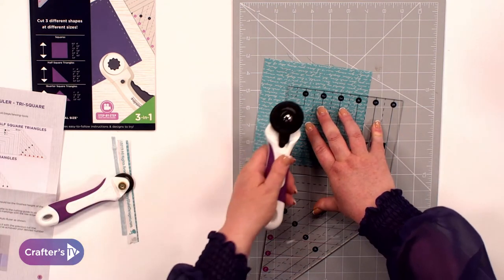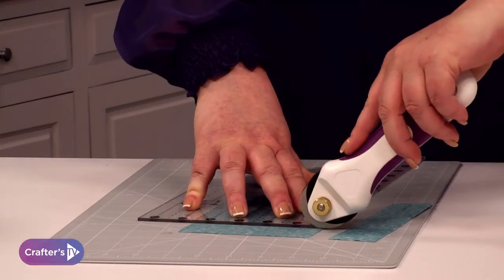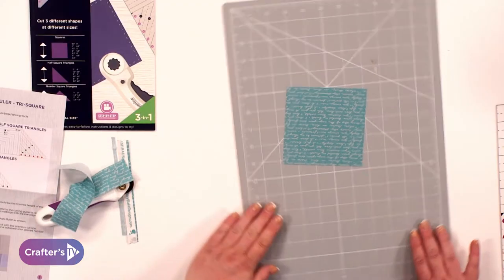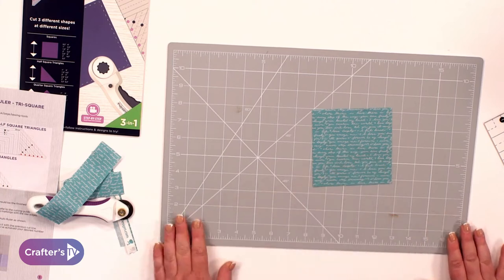Then I'm going to put that four and a half inch line on the straight edges that I've just cut, and then I'll get the 45mm and I'm going to cut up one side, across the top and there we have a four and a half inch square.